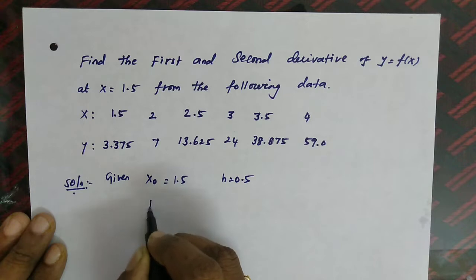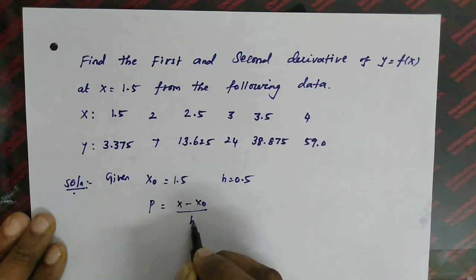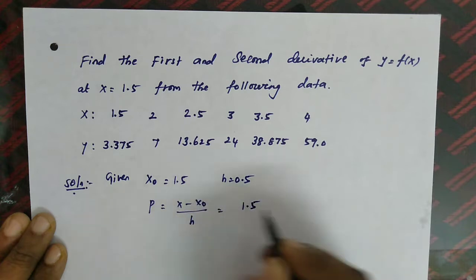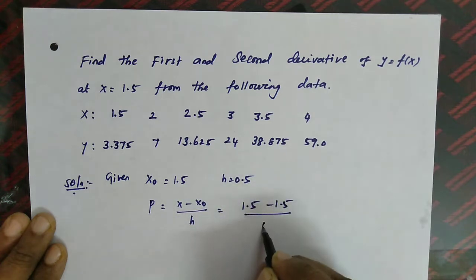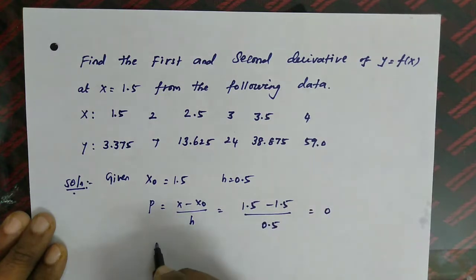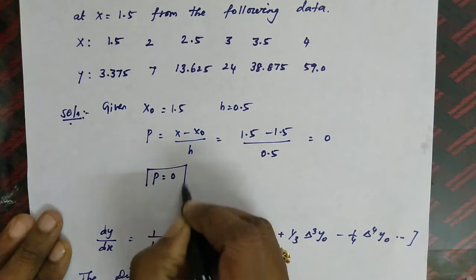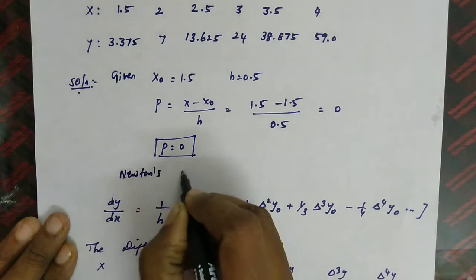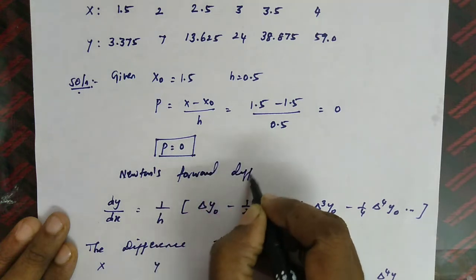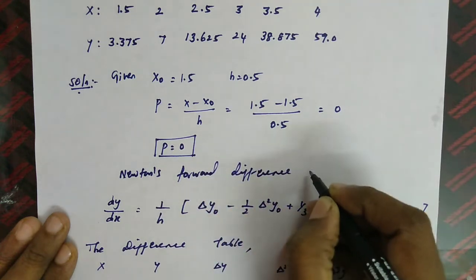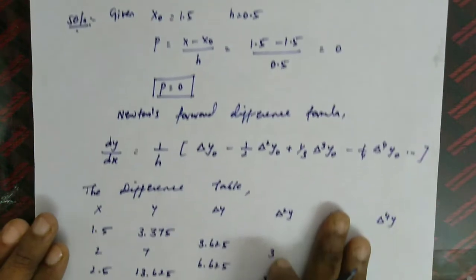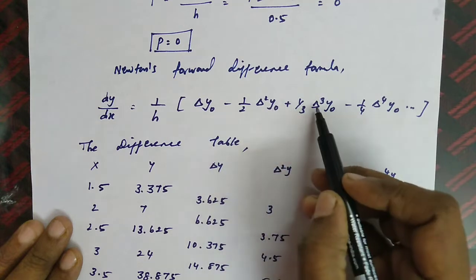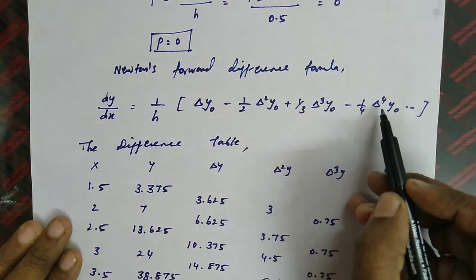We also have a value p, which is (x minus x₀) divided by h. Here x is the given point, which is 1.5, and x₀ is 1.5, with h equal to 0.5. So our p value is 0. Newton's forward difference formula for dy/dx equals (1/h)[Δy₀ minus (1/2)Δ²y₀ plus (1/3)Δ³y₀ minus (1/4)Δ⁴y₀ ...].